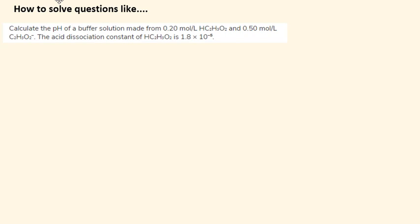We are asked to calculate the pH of a buffer solution made from 0.2 mol per liter HC2H3O2 and 0.50 mol per liter C2H3O2 minus. The acid dissociation constant of HC2H3O2 is 1.8 times 10 to the minus 5.